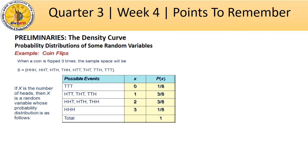The probability of obtaining zero heads is 1/8. The probability of obtaining one head is 3/8. The probability of obtaining two heads is 3/8. The probability of obtaining three heads on those three coin flips is 1/8. Take note that when you add all the probabilities, you will get 1, which means our probability distribution is consistent.